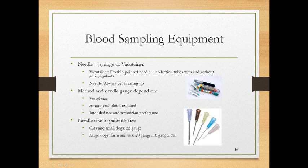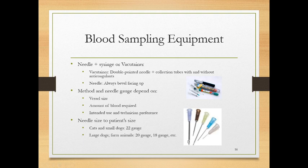Whenever we're placing a needle into a patient — whether a catheter needle or regular needle — we always want the bevel up. That allows blood to flow more freely into the needle. The method and needle gauge depend on vessel size, the amount of blood needed, how it will be used, and technician preference. Needle sizes range from 14 gauge down to 25 or 30 gauge. Remember: the bigger the number, the smaller the needle.